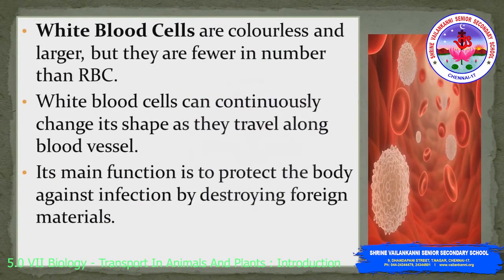The next type of blood cell is the white blood cell, also called WBCs. White blood cells are colorless and larger but fewer in number compared to red blood cells. White blood cells can continuously change their shape as they travel along the blood vessel. Their main function is to protect the body against infection by destroying foreign materials.